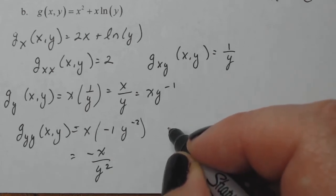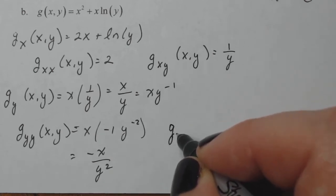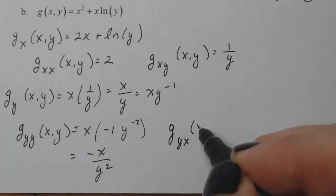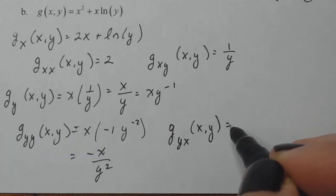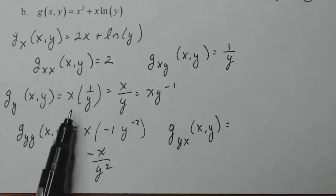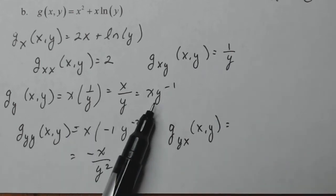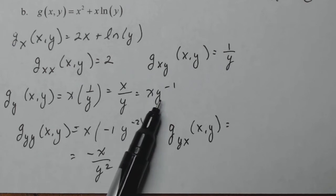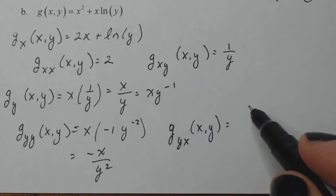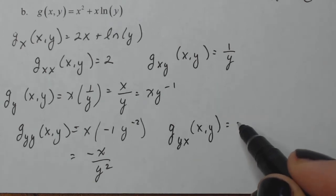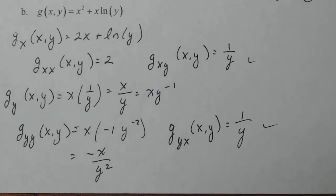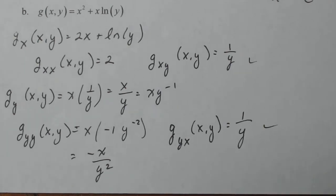And then I have g sub yx. Let's just make sure that it turns out the same. So I have to take the derivative of this guy with respect to x. So that's going to give me, that guy's a constant and that's one derivative, so I get y to the minus one, which is one over y. So they both check out. Let's go to the next example.